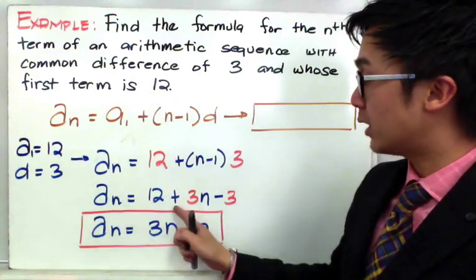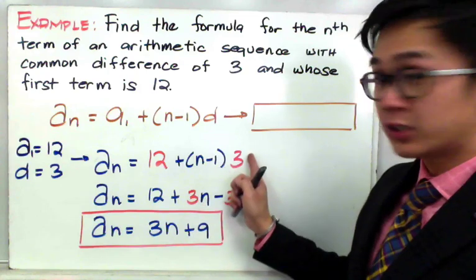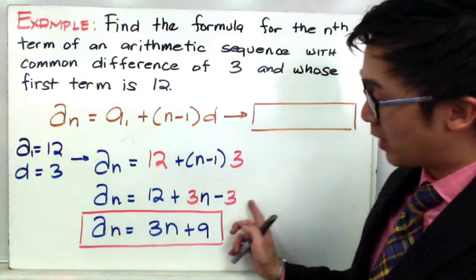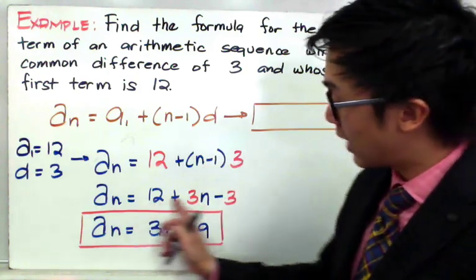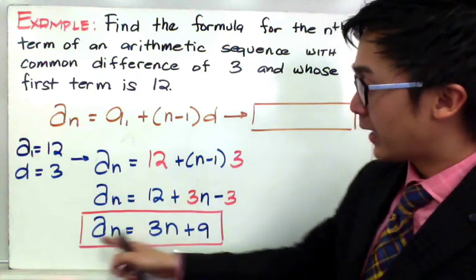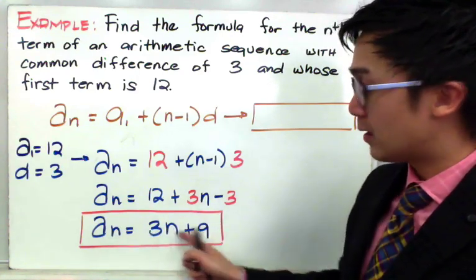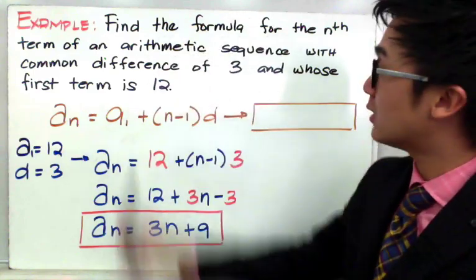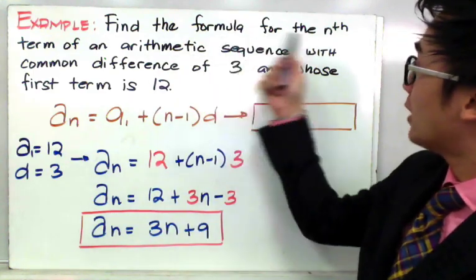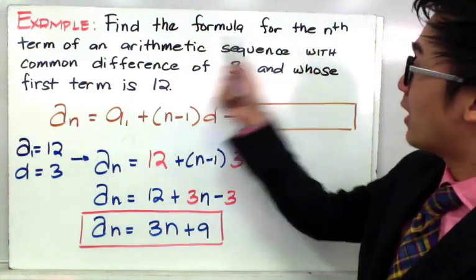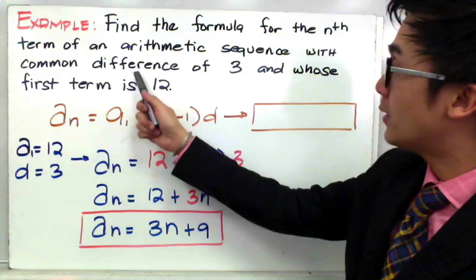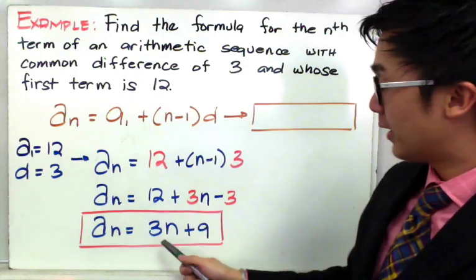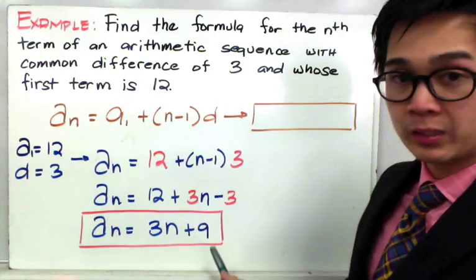By straight substitution, plugging in a sub 1 equals 12 and d equals 3, we get a sub n equals 12 plus 3 times the quantity n minus 1, which gives 3n minus 3. Simplifying further, a sub n equals 3n plus 9. Therefore, the formula for the arithmetic sequence whose common difference is 3 and whose first term is 12 is 3n plus 9.